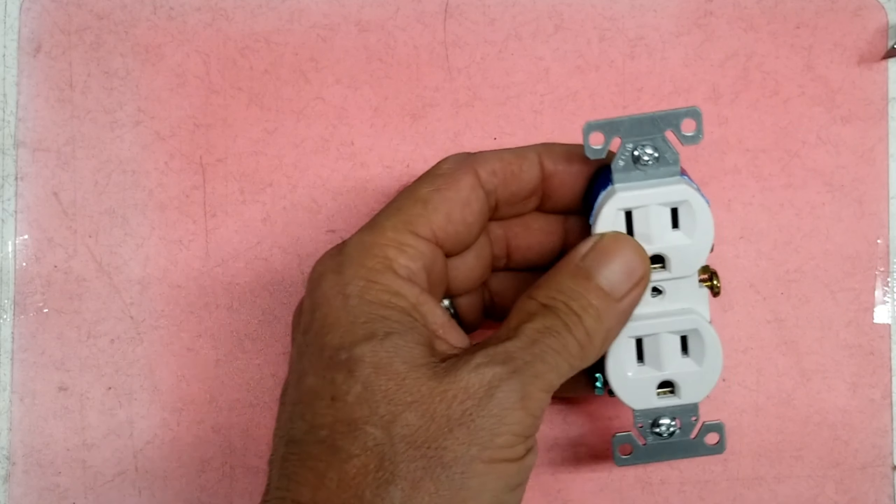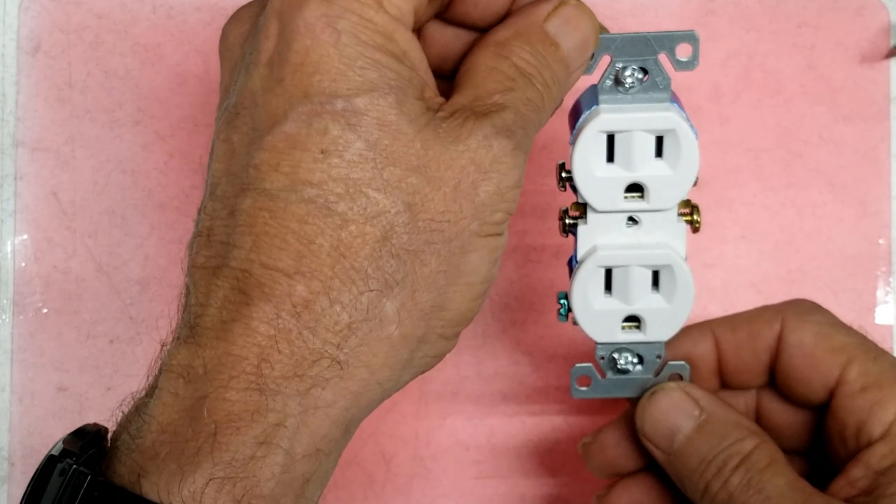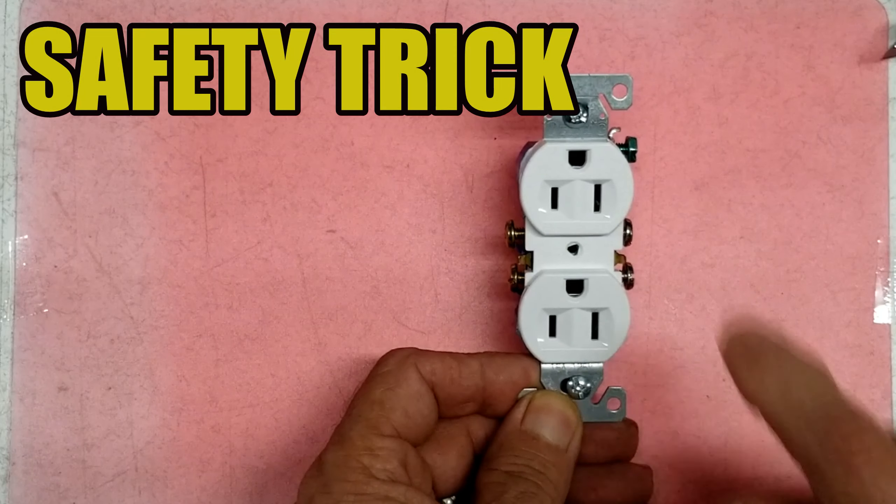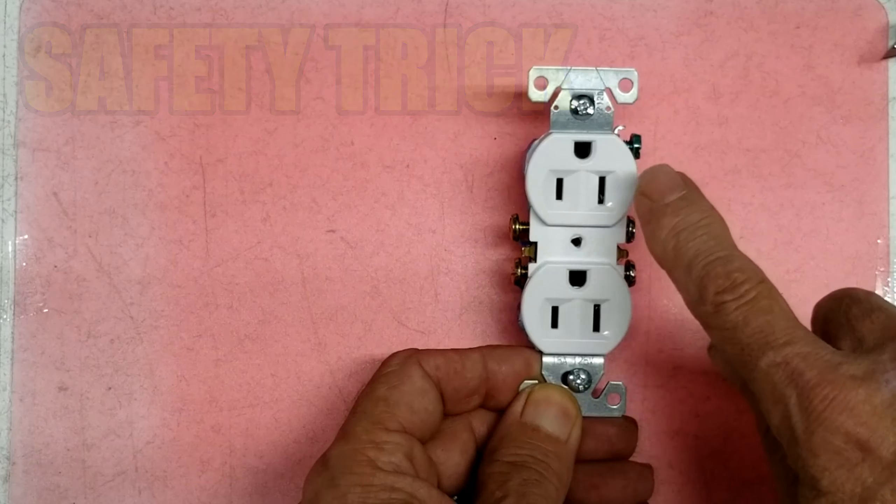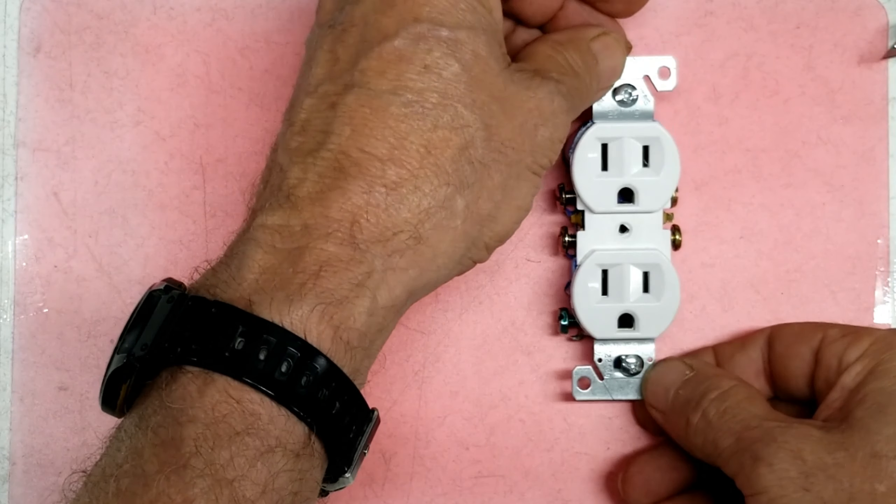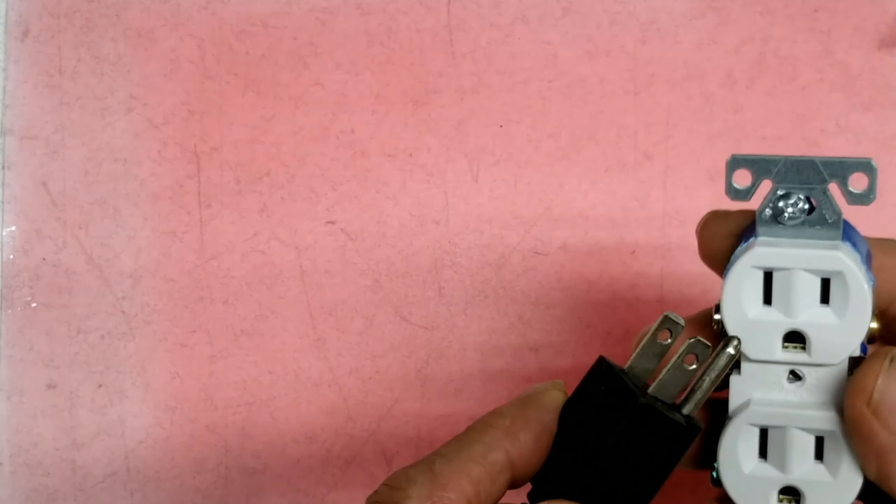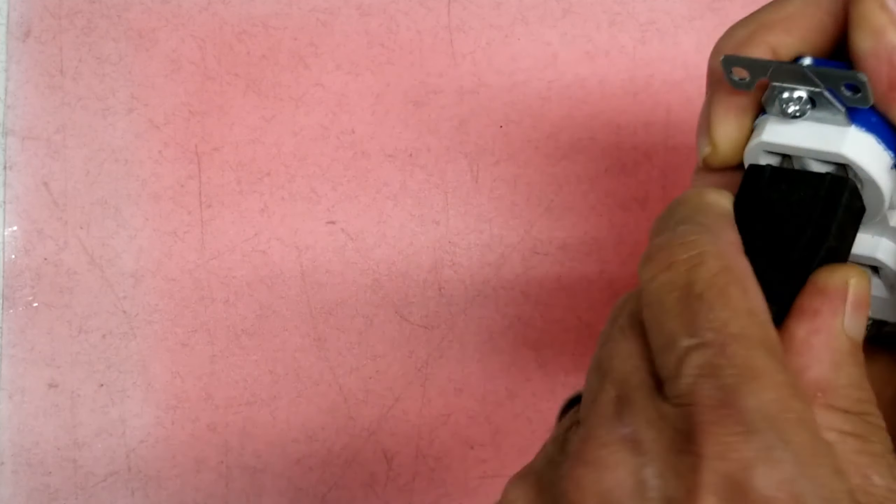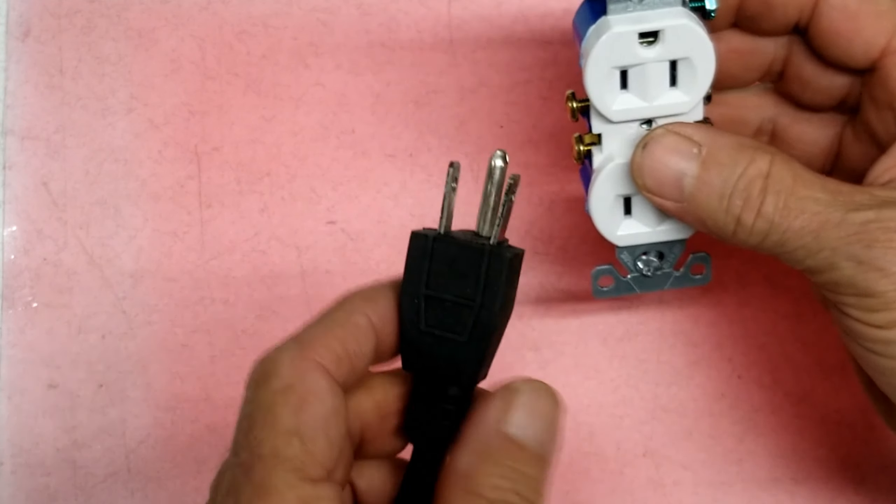And they correspond right with the screws, the hot side, the neutral side. And something else I wanted to show you about these things that they've been arguing about, some say there should be the ground up. And I agree. More safely, I'll show you the reasons here that this is a better way to do it. But most of your homes all through the years is like this, the ground down. And the reason being on these plugs, most of them is like this.